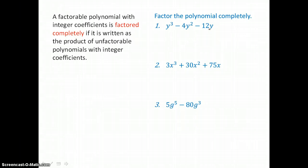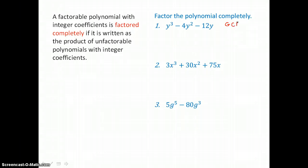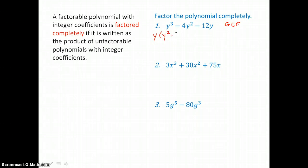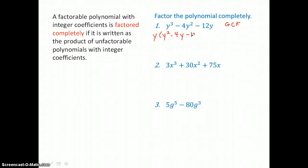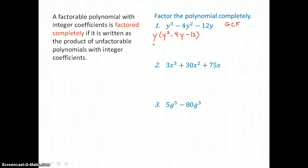This first trinomial has a greatest common factor, and we always want to look for that GCF first. It has a greatest common factor of y, so we'll factor that out, leaving y squared minus 4y minus 12. You can always check by distributing: y times y squared is y cubed, y times negative 4y is negative 4y squared, and y times negative 12 is negative 12y. So it's factored correctly.